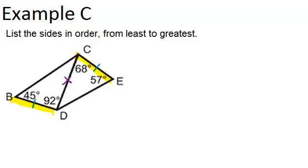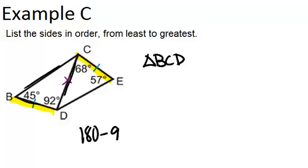So, let's look at each triangle separately. First, for triangle BCD, in order to figure out these three sides, how they compare, we should figure out the missing angle. So, we can do 180 minus 92 minus 45 to get 43 degrees for this missing angle. So, that means, in this triangle, the smallest side is BD, because it's across from the smallest angle.